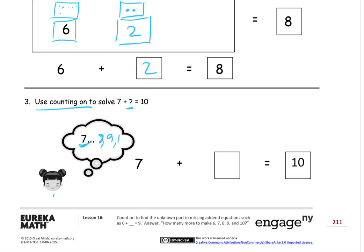8, 9, 10. Sloppy 8. 8, 9, 10. That's 3 more numbers. So 7 plus 3 is 10. So 3 more.